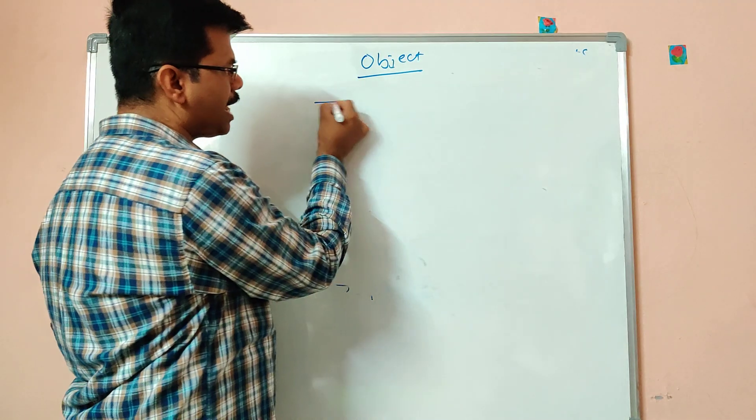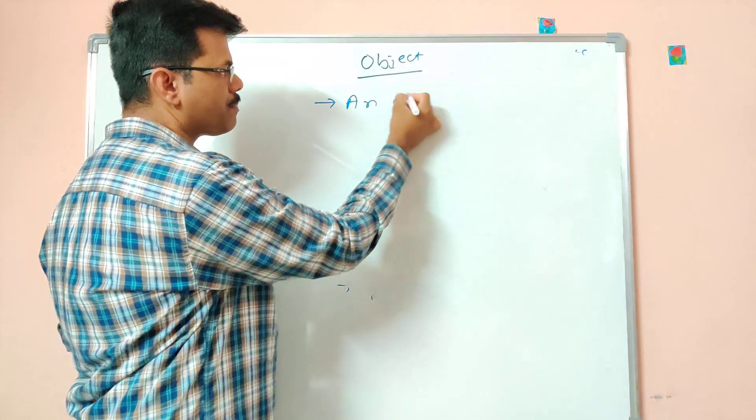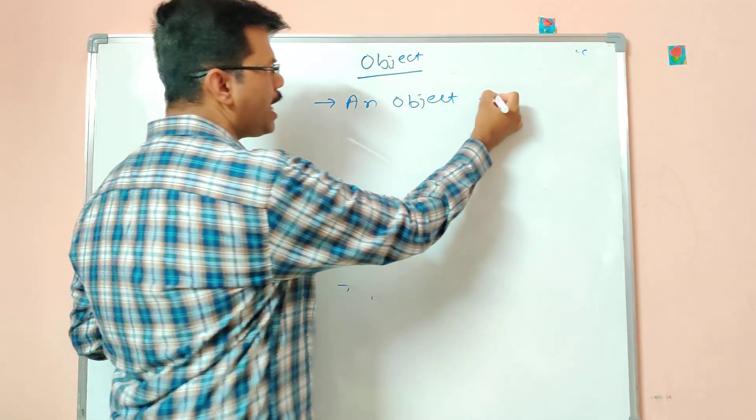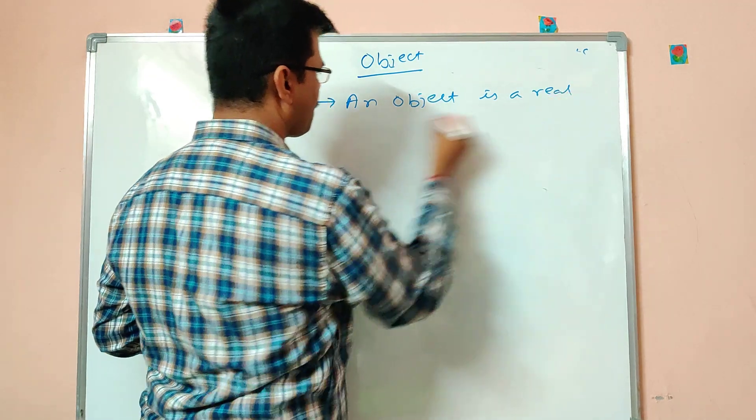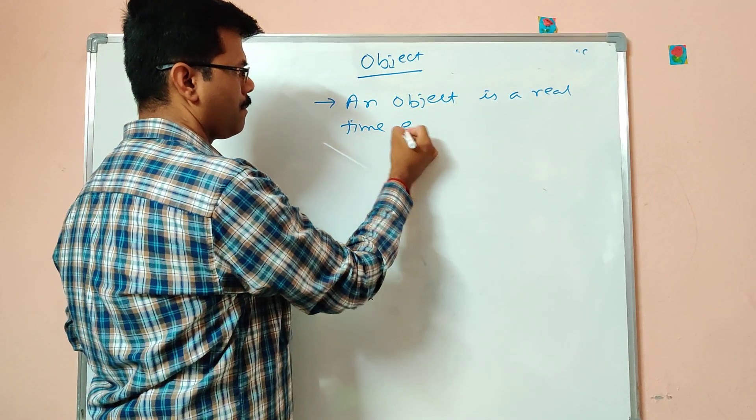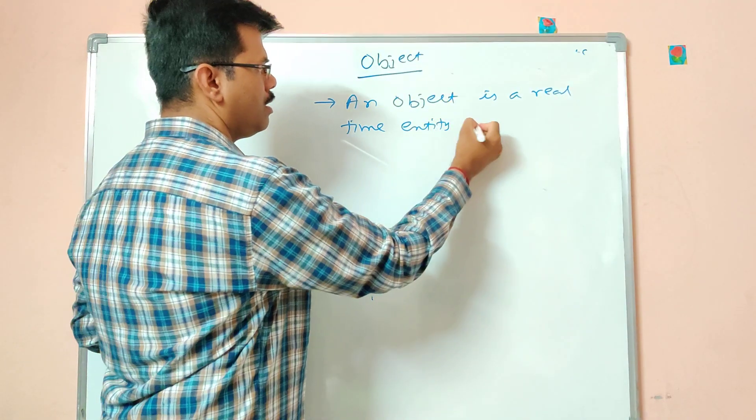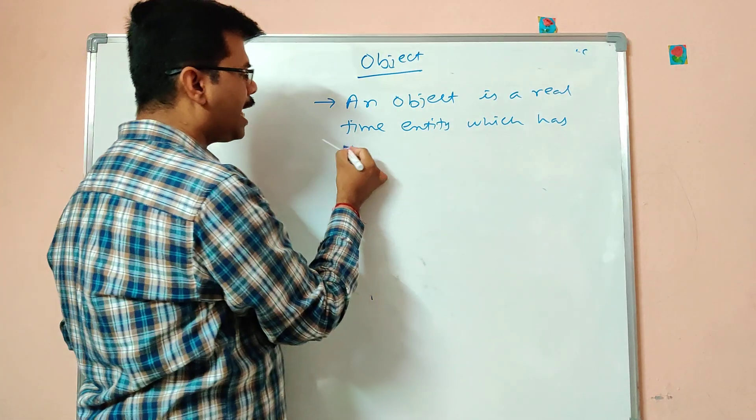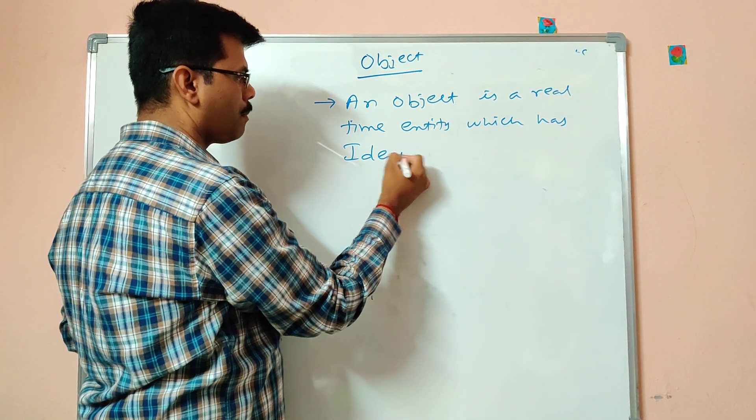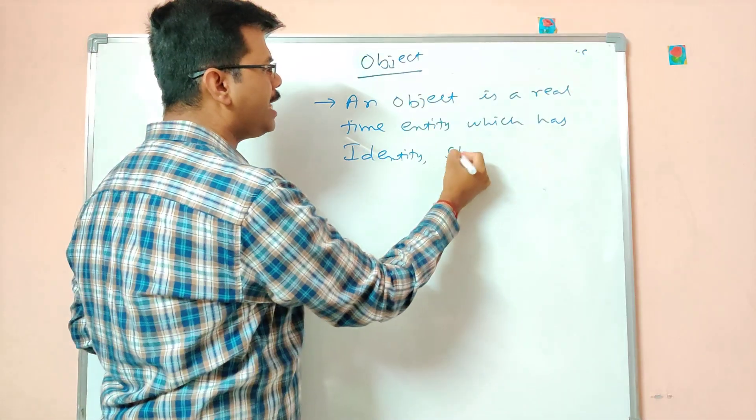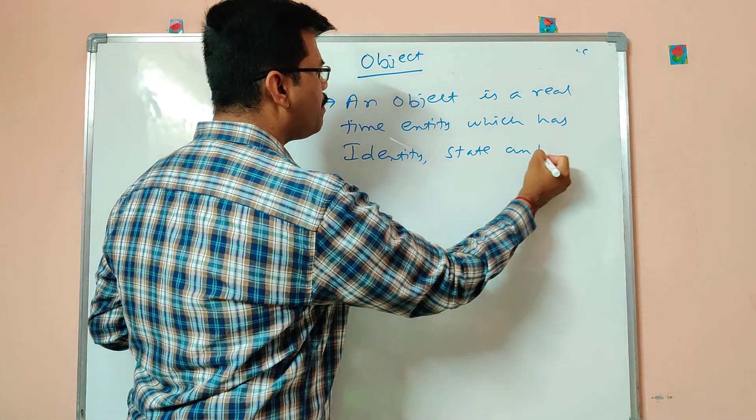So how to define an object is like: An object is a real time entity which has identity, state and behavior.